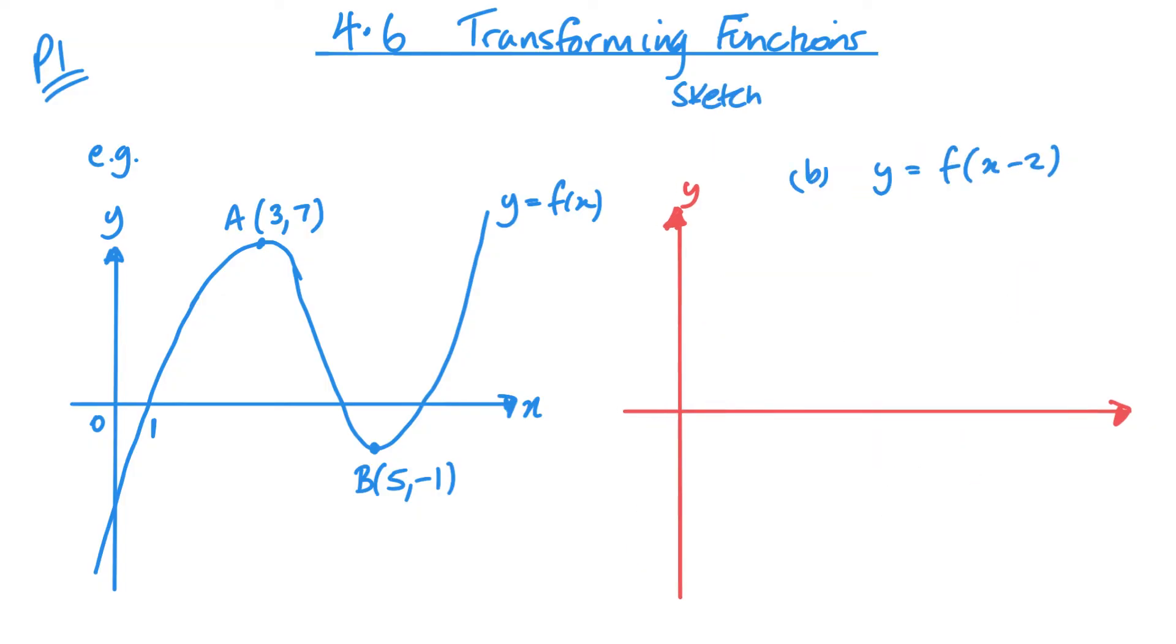Second one now we're looking at f of x minus 2. So minus 2 is inside the brackets, it's horizontal and we are moving it two units to the right.